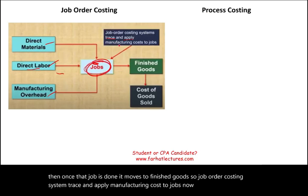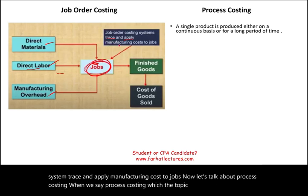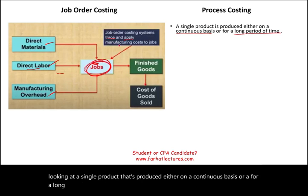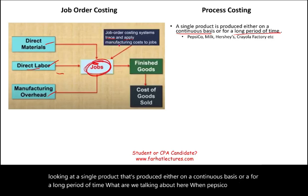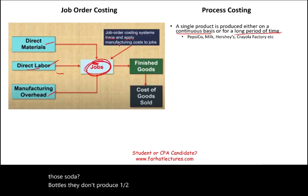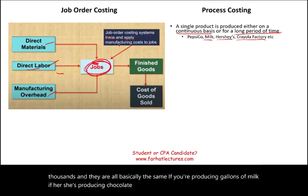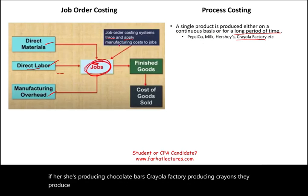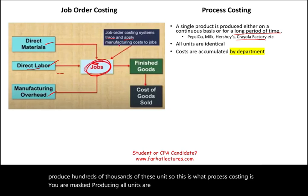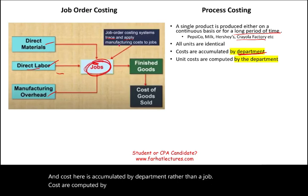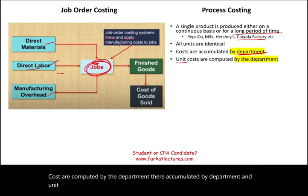Now let's talk about process costing. Process costing applies when a single product is produced either on a continuous basis or for a long period of time. When PepsiCo produces soda bottles, they produce hundreds of thousands and they are all basically the same. If you're producing gallons of milk, Hershey's producing chocolate bars, or Crayola producing crayons — that's process costing. You are mass producing, all units are identical, and costs are accumulated by department rather than by job.